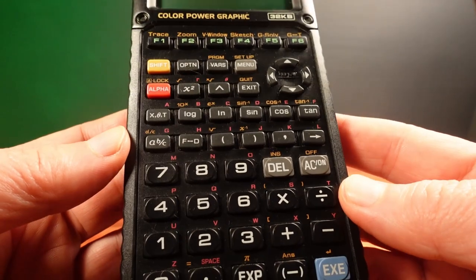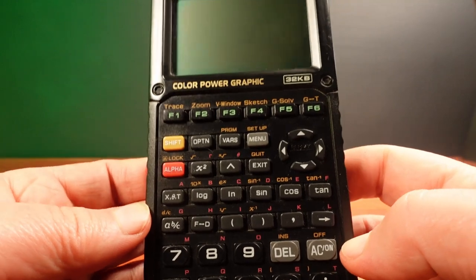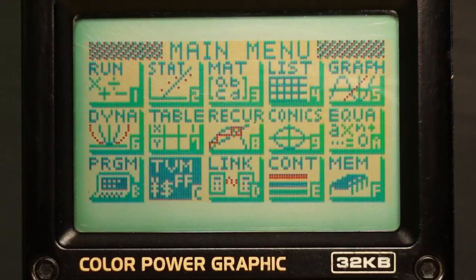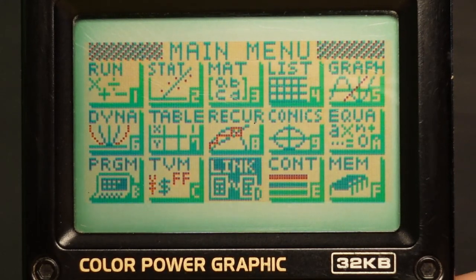The 9850 series are unique, not only because they had colour screens more than a decade before any other brands, but the colour screen on this calculator is like no other colour display before or since.